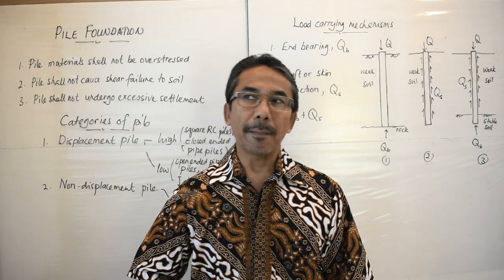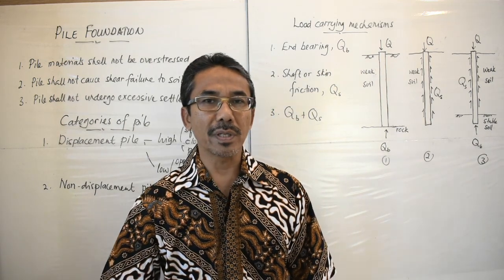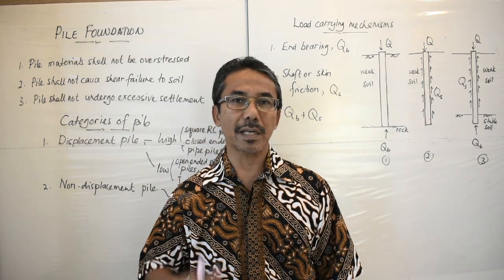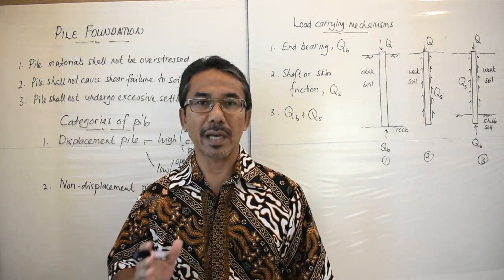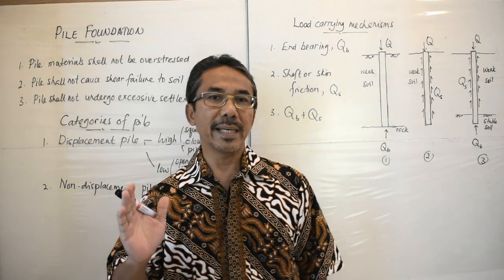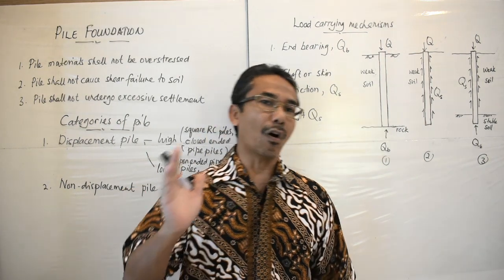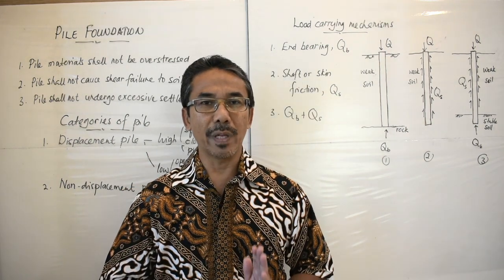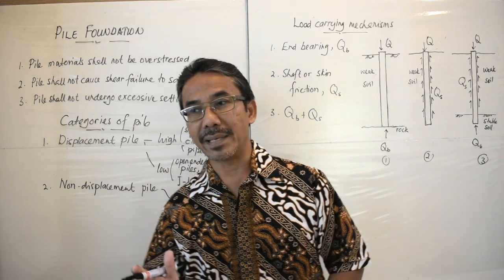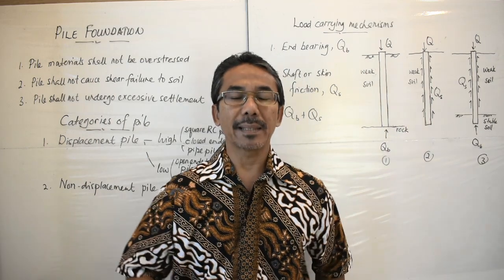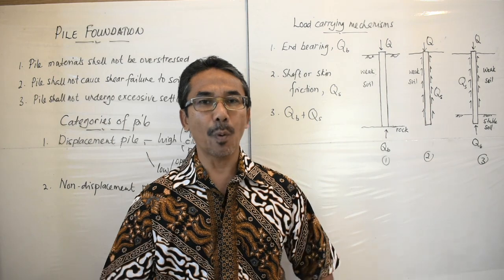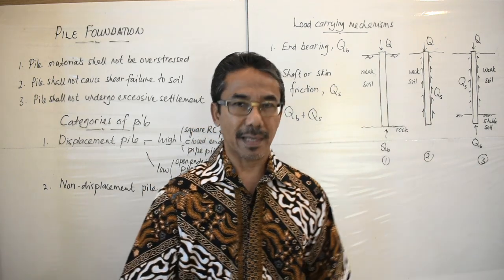The second reason is that pile can be used to resist uplift load. Just imagine high-rise buildings — those structures are exposed to wind load. When exposed to wind load, the structure tends to overturn, so one side will be under compression and the opposite side will be under tension or uplift. Pile can be used to resist this uplift in order to maintain the stability of the structure.